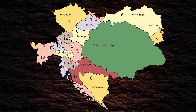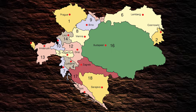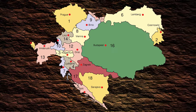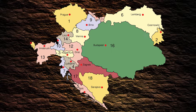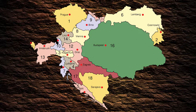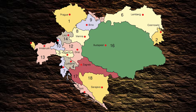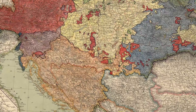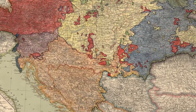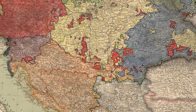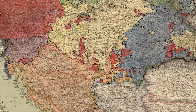Another problem was the division of the crown lands — that is, the individual territorial divisions of the monarchy. The boundaries of these were based on century-old wars and territorial disputes that often stretched far back into the time of the Holy Roman Empire. However, they had little in common with the actual distribution of the various ethnic groups in the dual monarchy.